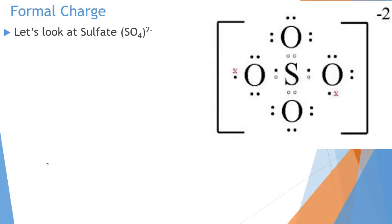If I were to ask you to build the molecule of sulfate, SO4 2-minus, you would put sulfur in the middle as the most needy atom. You would have your four oxygens around it, added up all your valence electrons — with those two extra from the negative two charge. What you would have created is a tetrahedral structure where everybody has its eight electrons.